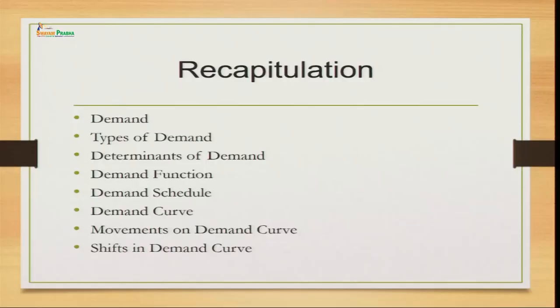Let us look at the topics we have covered in our previous session. We have talked about demand — what demand is — and we have seen that demand will be effective only when a person has a desire, willingness, and ability to pay for it. We also discussed different types of demand: direct and derived demand, recurring and replacement demand, competing and complementary goods demand, and individual and market demand.